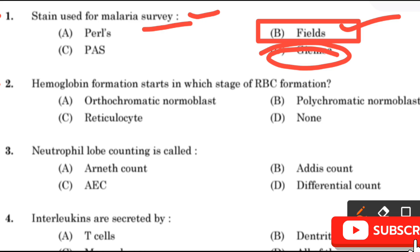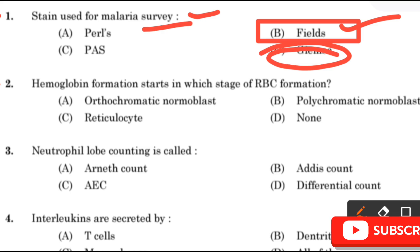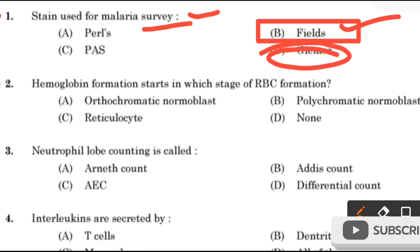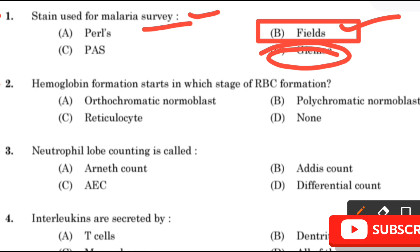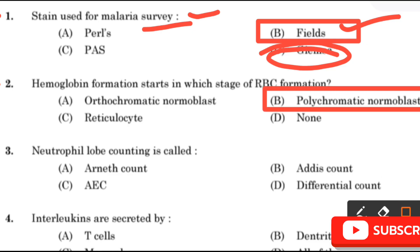Next question: Hemoglobin formation starts in which stage of RBC formation — Orthochromatic normoblast, Polychromatic normoblast, Reticulocyte, or None? The right answer is Polychromatic normoblast.